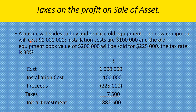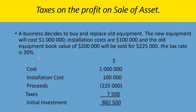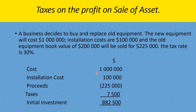Worked example — tax on a profit on sale of asset: same scenario, but the old equipment with a book value of $200,000 is sold for $225,000, giving a profit of $25,000. This increases income in the income statement, so taxes increase by $7,500 (30% of $25,000). That additional tax is added to the initial cost, bringing it to $1,030,500. Taxes on the profit will increase the initial cost of your investment.